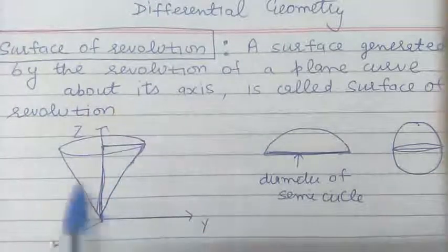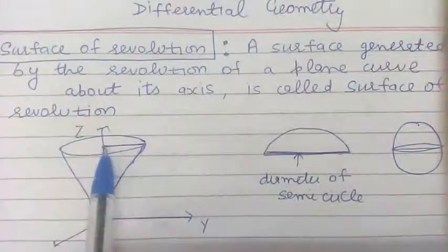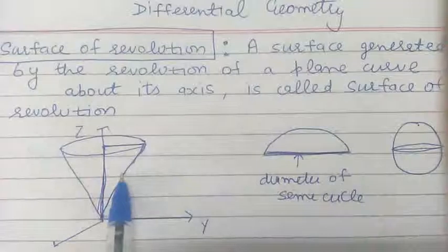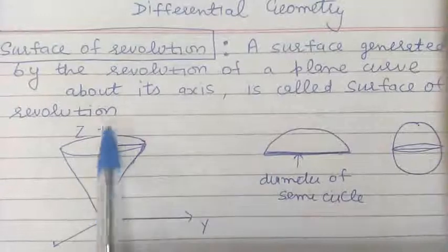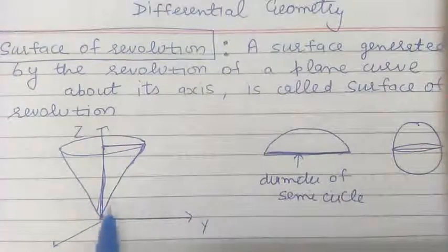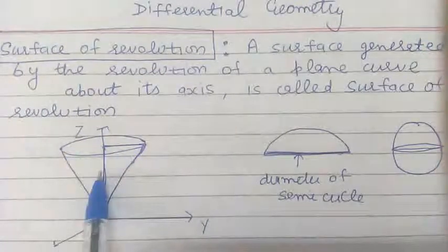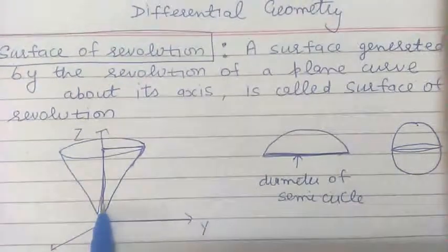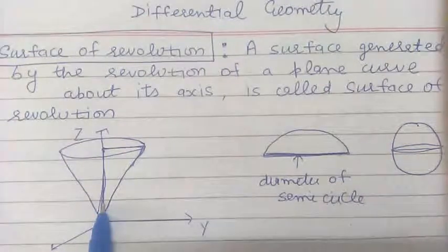For example, if we take the coordinate axes — x axis, y axis and z axis — and this right angle triangle is a plane curve. Let us rotate this right angle triangle about this axis. Then the surface of revolution which is generated is a right circular cone. So, if we rotate a right angle triangle about this axis, the surface of revolution is a right circular cone.